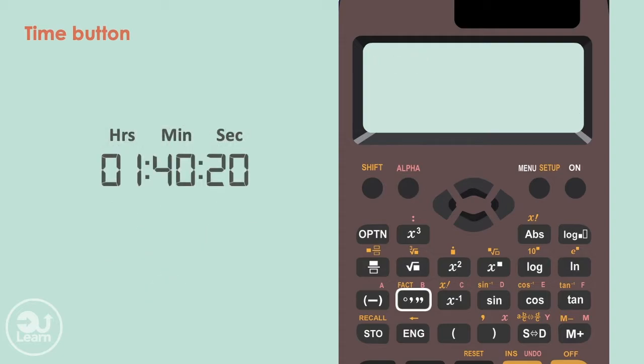The reverse can also be done, for example, converting an hour, 40 minutes and 20 seconds to a decimal. Type the time into the calculator by pressing 1, followed by the time button, 40, time button again, and finally 20, followed by the time button. Pressing equals gives us our time version. To represent this as a decimal, press the time button once again, and now we have the decimal version of this time, which is 1.672 recurring hours.